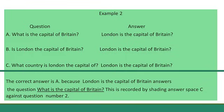Example 2. What is the capital of Britain? London is the capital of Britain. Is London the capital of Britain? London is the capital of Britain. What country is London the capital of? London is the capital of Britain. The correct answer is A because 'London is the capital of Britain' answers the question 'What is the capital of Britain?' This is recorded by shading answer space A against number 2.